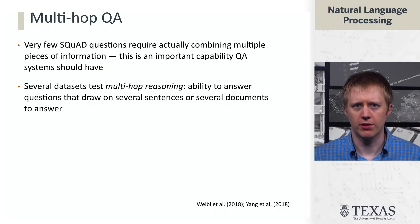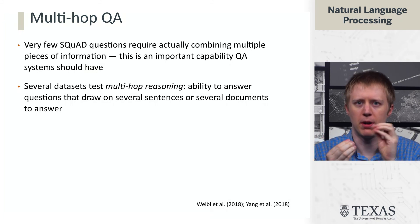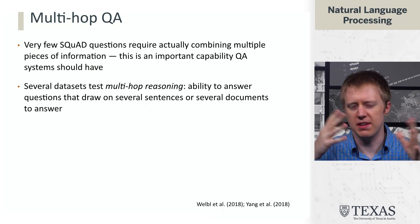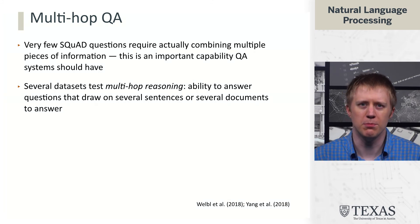In this segment, we're going to talk about a more challenging variant of question answering called multi-hop question answering. The datasets we've been looking at so far, in particular the SQuAD dataset, don't really require combining multiple pieces of information. If we ask when did Marie Curie win the Nobel Prize, we're basically looking for a statement that she won the Nobel Prize in a given year, and we don't really need to take pieces of information from different parts of a paragraph or different documents — though it might happen in a small percentage of examples.